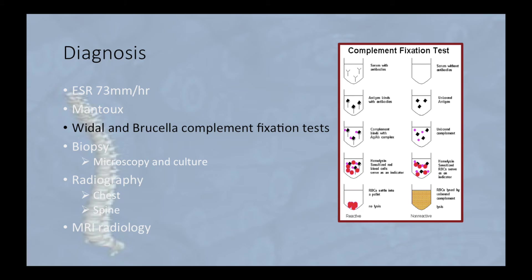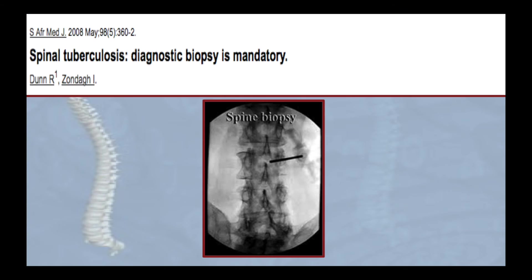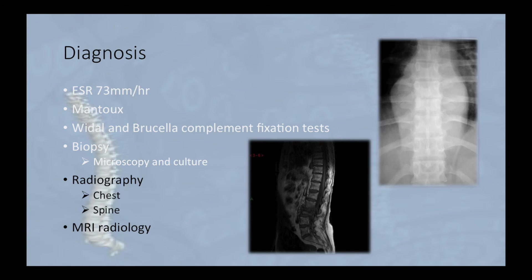Further investigations include Widal and Brucella complement fixation tests. A biopsy should be taken for microscopy, culture, and sensitivity — as there is an increasing differential for spinal TB, tuberculosis must be confirmed. With CT-guided biopsies there is often poor yield and a long wait for culture. For histology, a larger core is obtained with percutaneous biopsy under general anaesthetic, often combined with abscess evacuation. Chest and spine radiographic imaging should be done — 50% of chest X-rays have signs of active or old TB. MRI should also be performed.